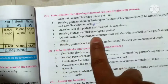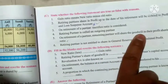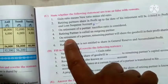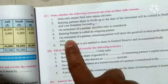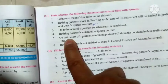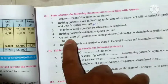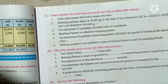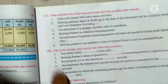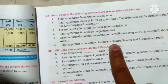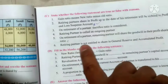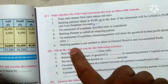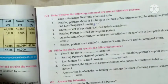Number 5: on retirement of a partner, remaining partners will share the goodwill in their profit sharing ratio. This statement is false, because remaining partners share goodwill in their gain ratio, not their existing profit sharing ratio.